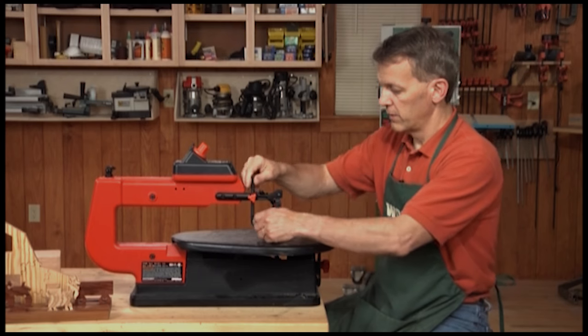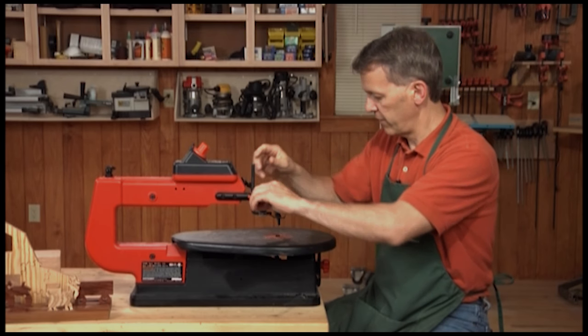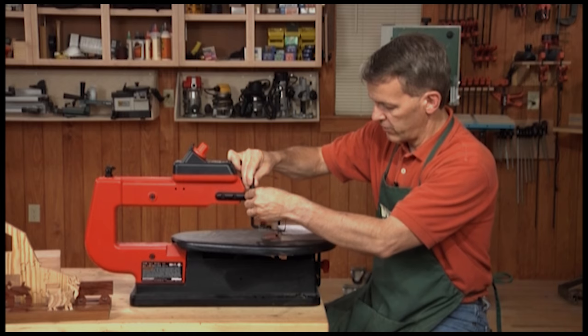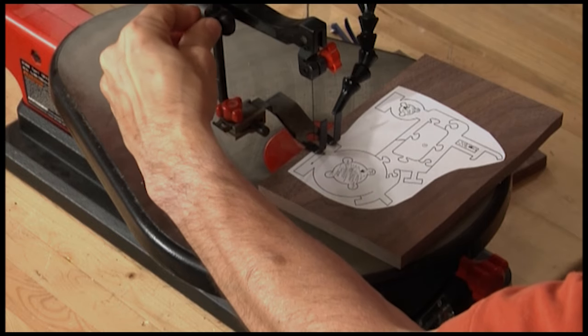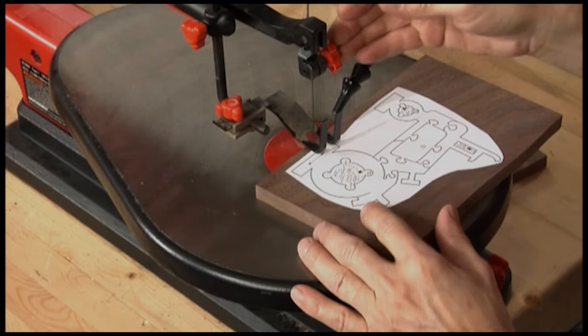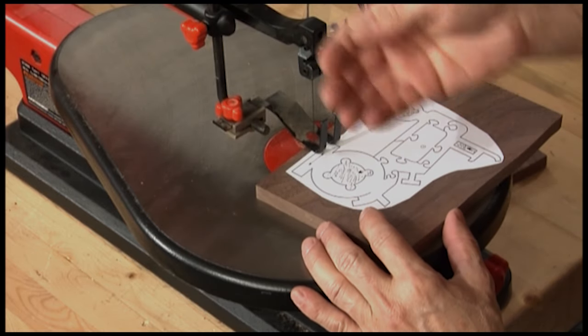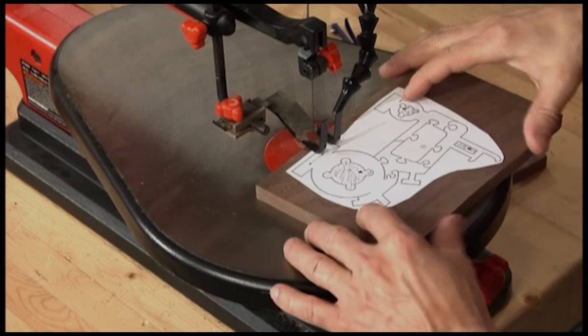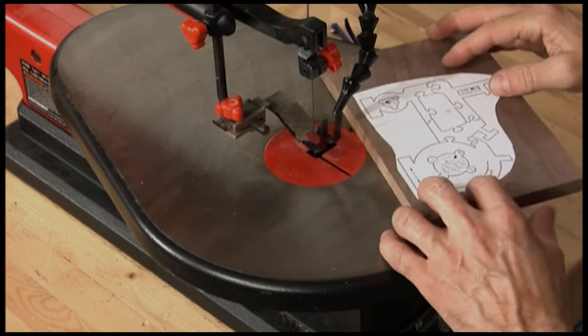Also on the scroll saw, you're going to find this foot here. This is designed to rest just a little bit above or lightly on your workpiece. You cinch that down. What that does is, as the saw blade comes up, it'll tend to want to grab the workpiece and bounce it up off the table. So this helps fight that, keeps things pressed down to the work surface.